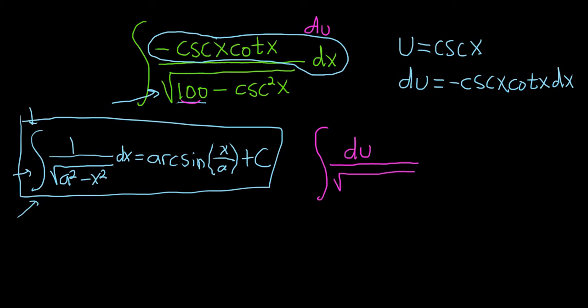The 100, we can write that as 10 squared minus, and then cosecant is u. So this is u squared, and we already have the du. I was going to write it twice, but it's already there. So we already wrote it here.